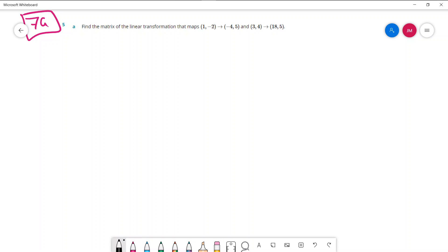So first thing we need to do is just give this transformation matrix some generic terms so A, B, C, D because I don't know what any of the four are and then we can put in the two points that we know. It's going to move the point 1, negative 2 to the point negative 4, 5, so that's one equation. The other equation is the same matrix A, B, C, D is going to move the point 3, 4 to 18, 5. So we need to find A, B, C and D.